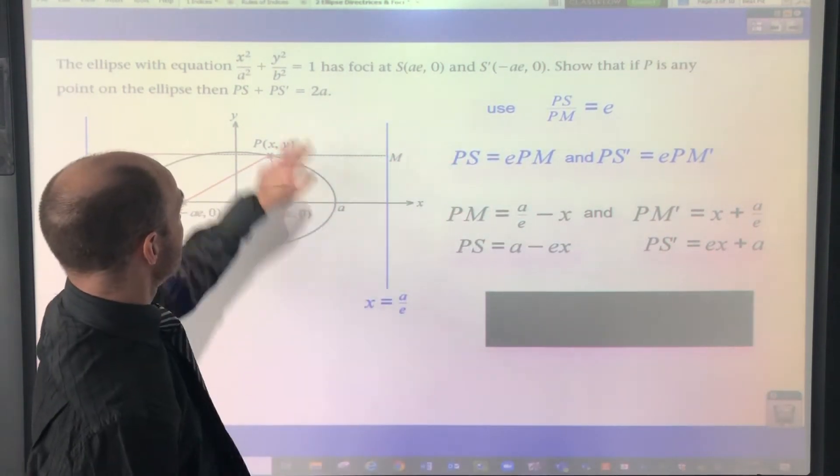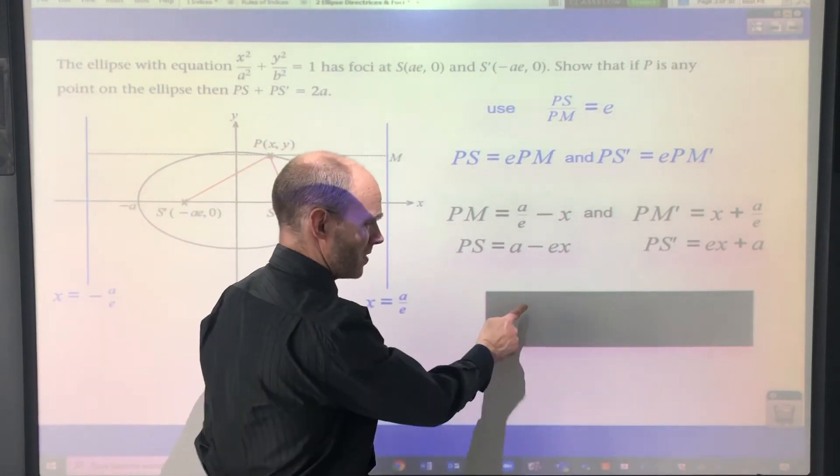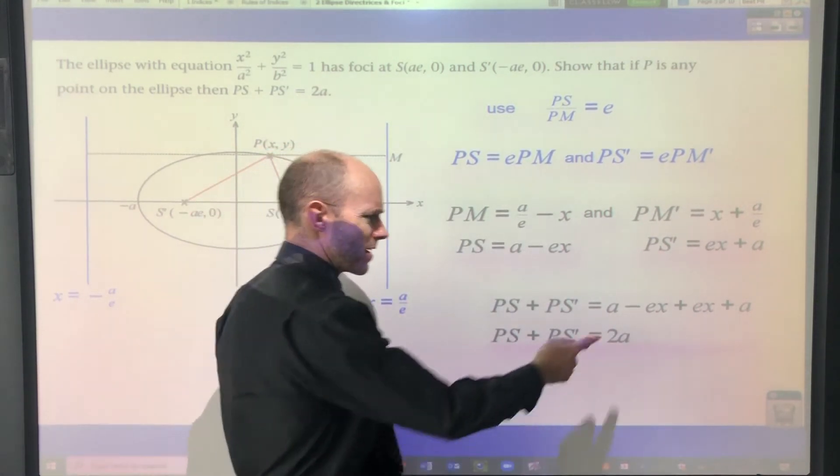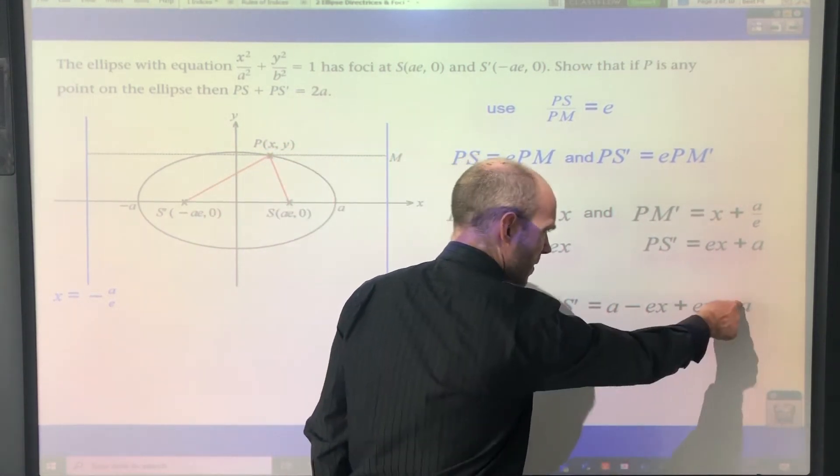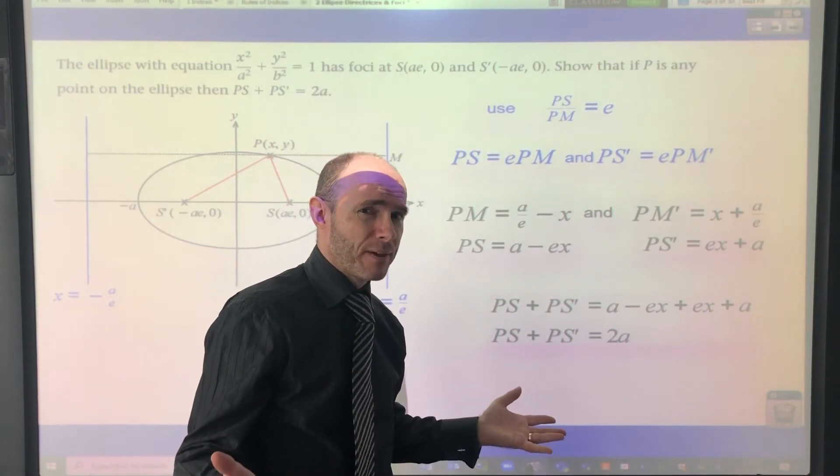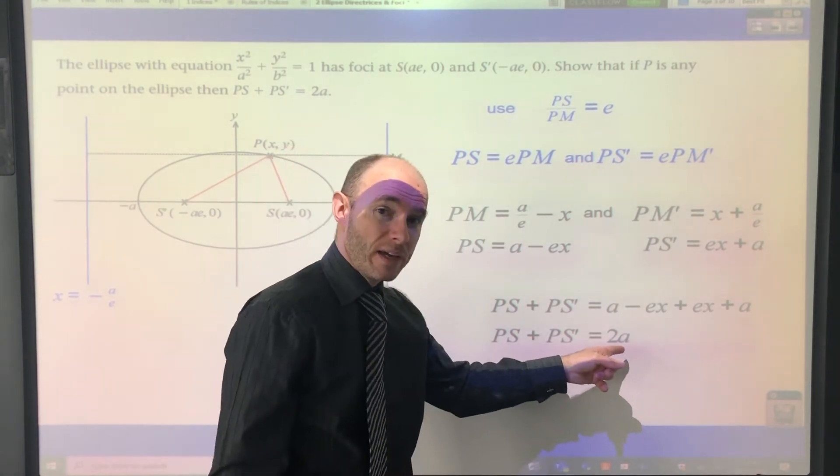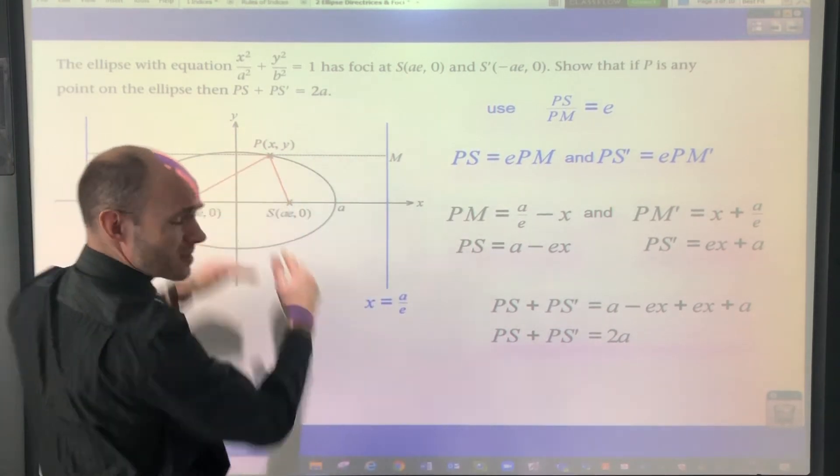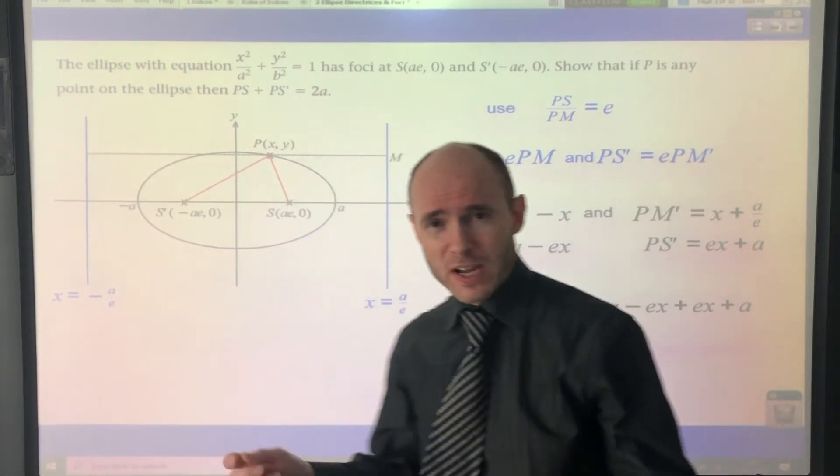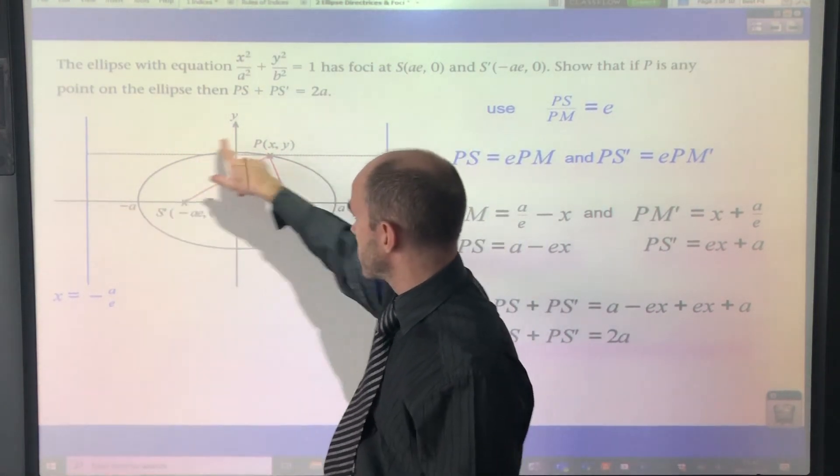All we need to do now of course is add them together, PS plus PS dash. Before I do that, you can see what's going to happen, can't you? Yeah, you can see that the ex and negative ex, they're going to cancel. So you've got a plus a equals 2a. And there's not really much more to it than that. It's really quite simple, isn't it? Let me just explain to you again that the fact that this plus this is equal to 2a, in other words these two lengths equal to 2a, means that it's always constant, it's always fixed. If I just, I don't have it anymore, but if I showed you the piece of string, that was always fixed, wasn't it? And that's why you get this nice elliptical path.